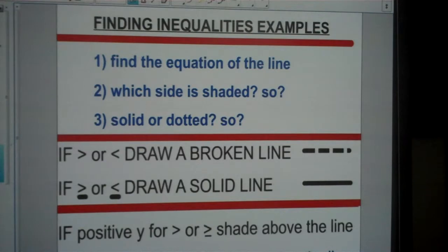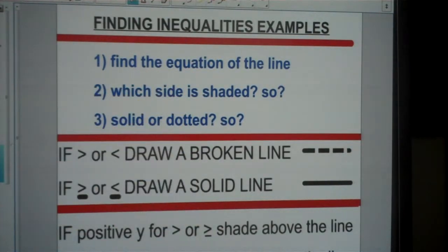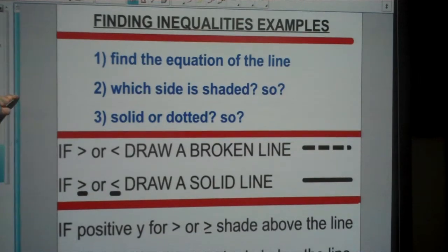When finding inequalities, there are three steps to follow. First, find the equation of the line, then determine which side is shaded. If it's shaded above, that means greater than or greater than or equal to. If it's shaded below, that means less than or less than or equal to. I've put little reminders on the bottom of what those mean.